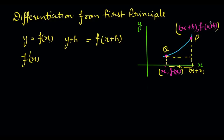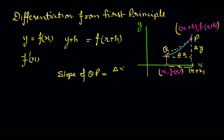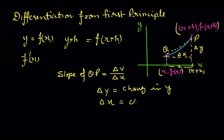At point P the value of x will be x plus h and the value of y will be f(x plus h) — it means the value of the function will also be increased by h. The slope of QP equals the change in x and change in y, so slope of QP is delta y upon delta x, where delta x is change in x and delta y is change in y.